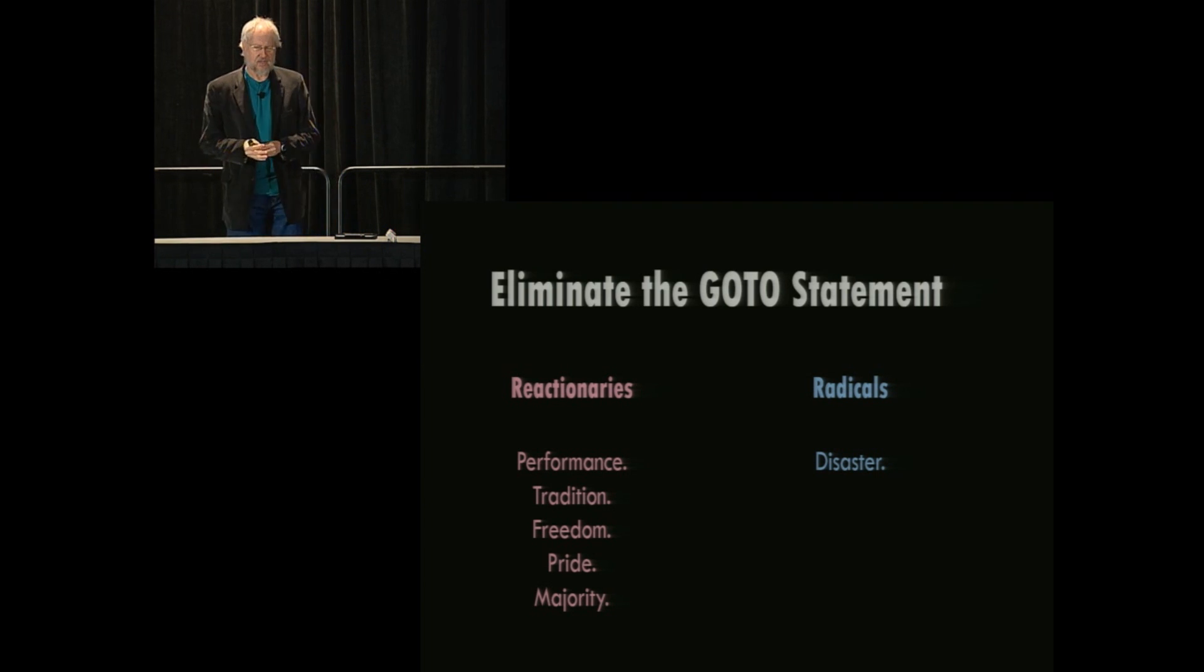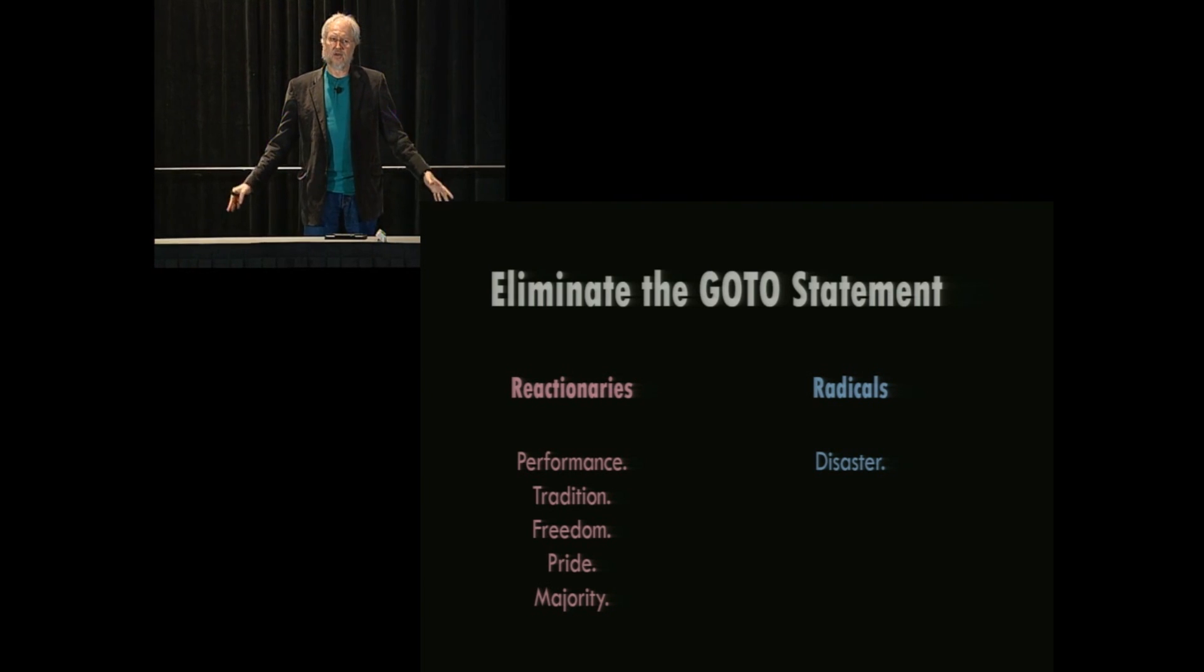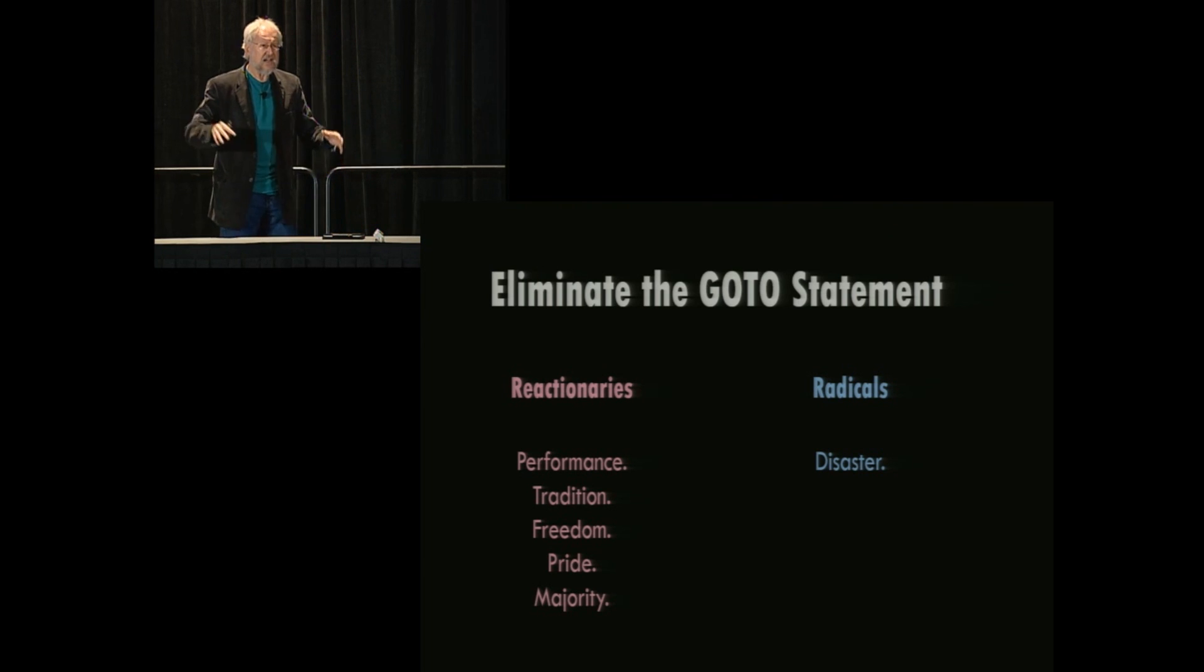And then finally there was the majority argument, which started off with nobody wants to eliminate go-to's, which is obviously wrong because the reason the question comes up is because somebody does. So mathematically that argument makes no sense. Smarter guys followed and said the majority of us want go-to's, we don't want it eliminated. And they continued to say that without any evidence that in fact they represented the majority, and they continued making that argument long after they didn't.